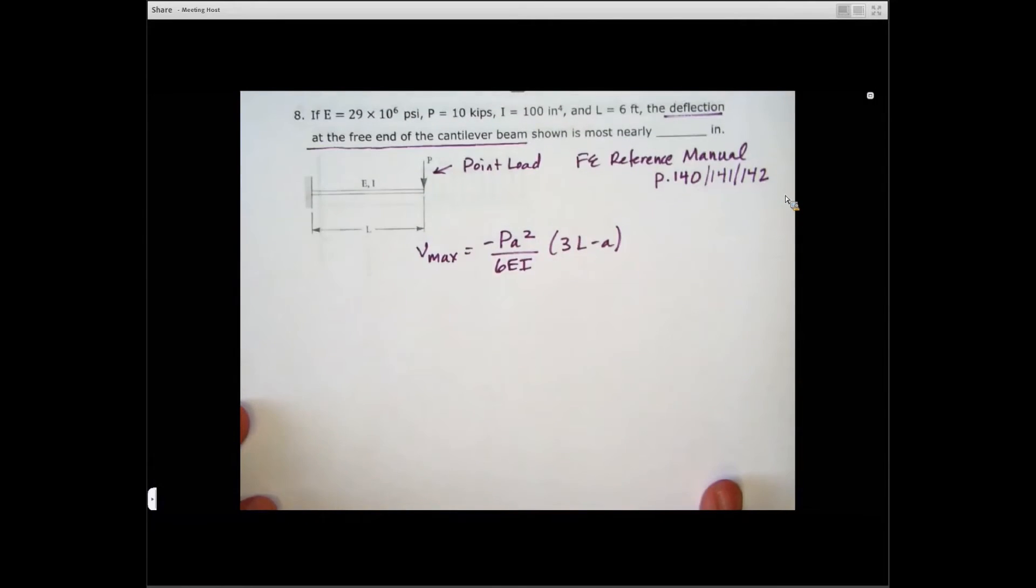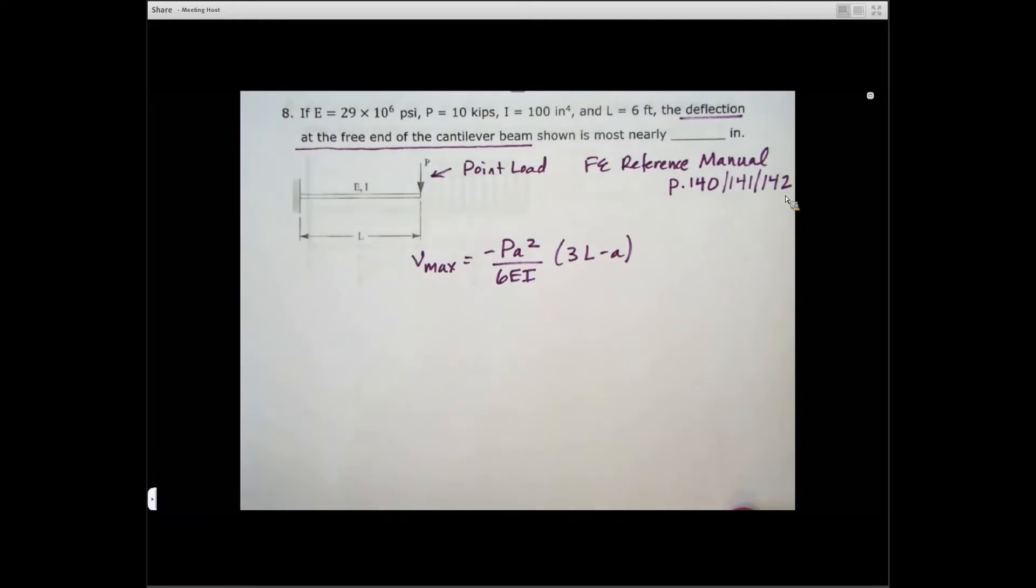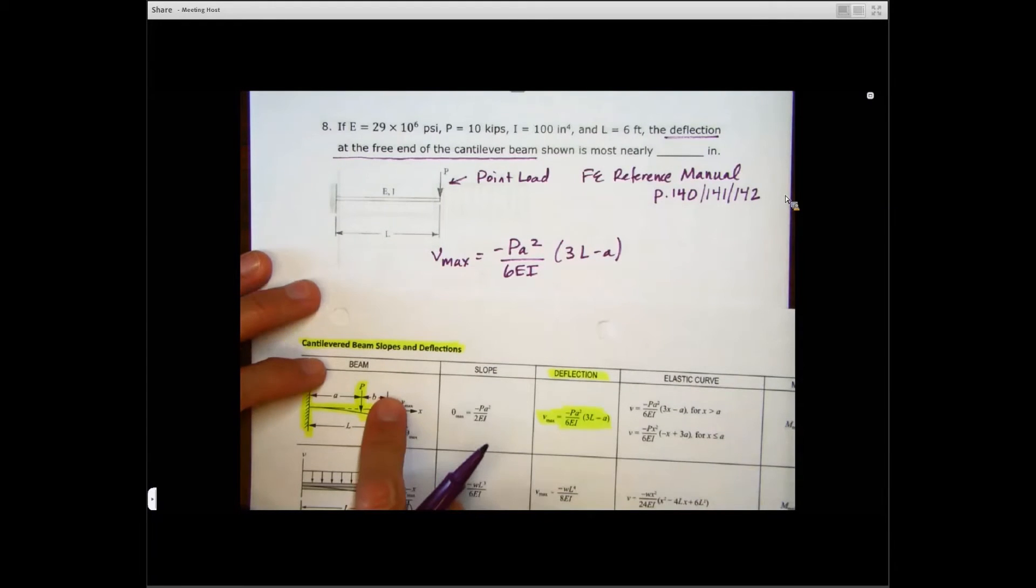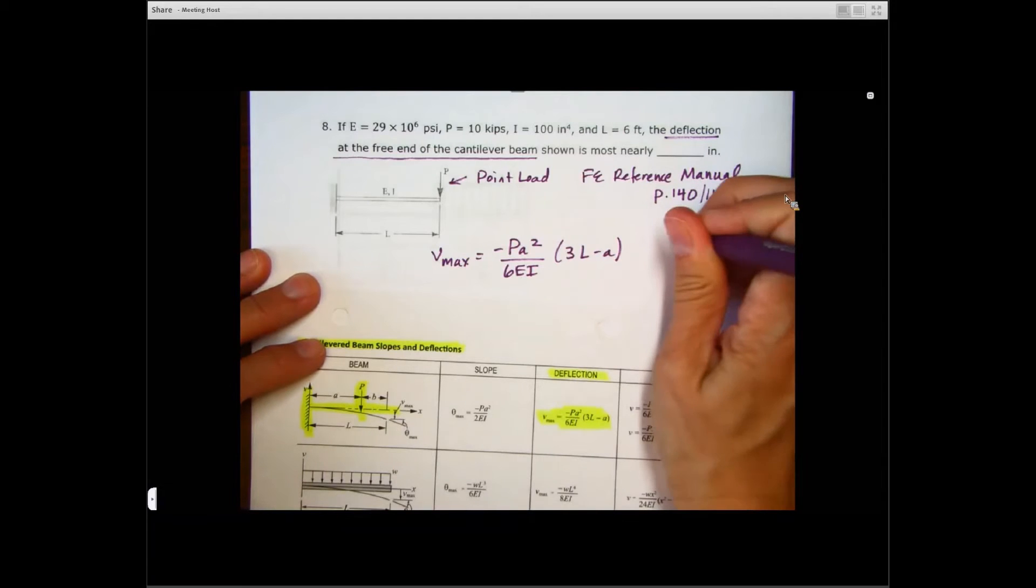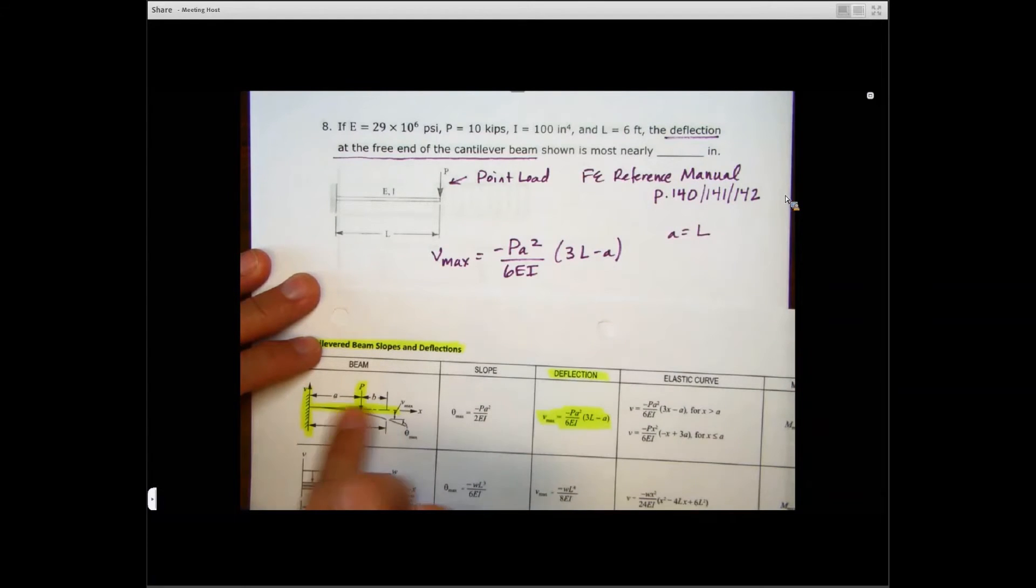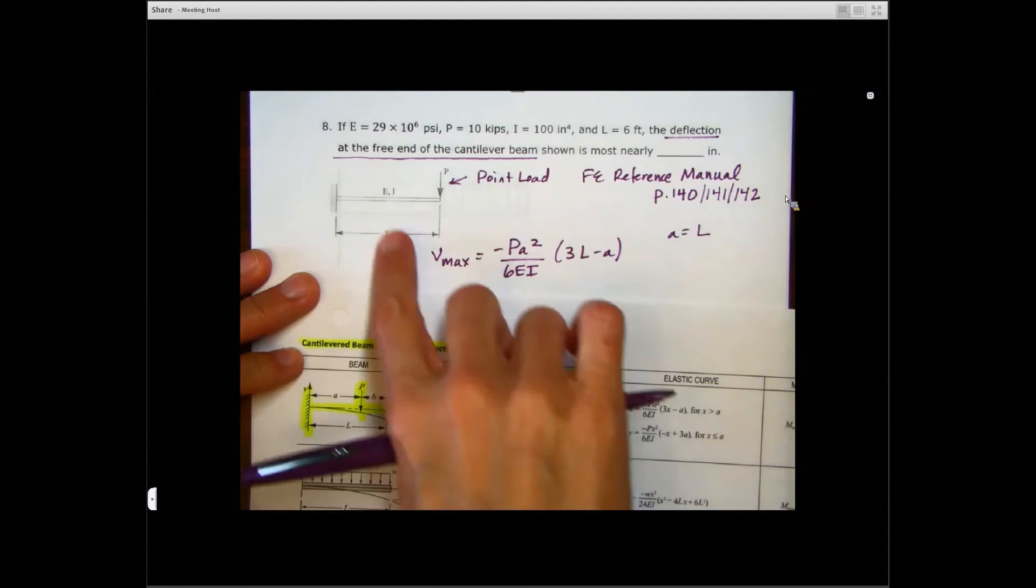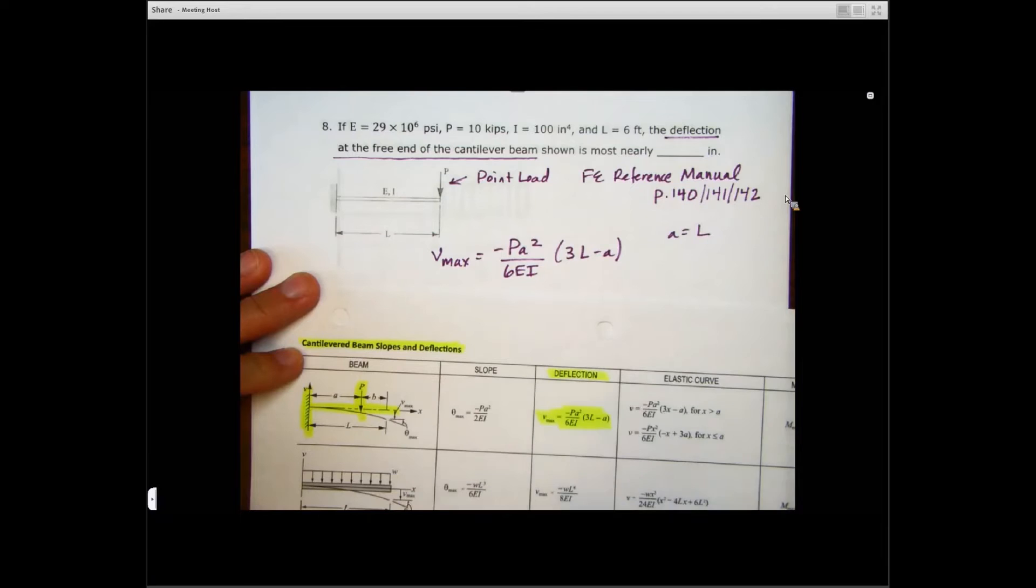So minus PA squared over 6EI times 3L minus A. Now, before I start plugging things in here, I like to look and come up with what these variables mean. Like I said, they're labeled here on the diagram. So in our case, A is just equal to L, right? Because A is that distance from the cantilever to the point load. It's that whole length of the beam. So it's L.